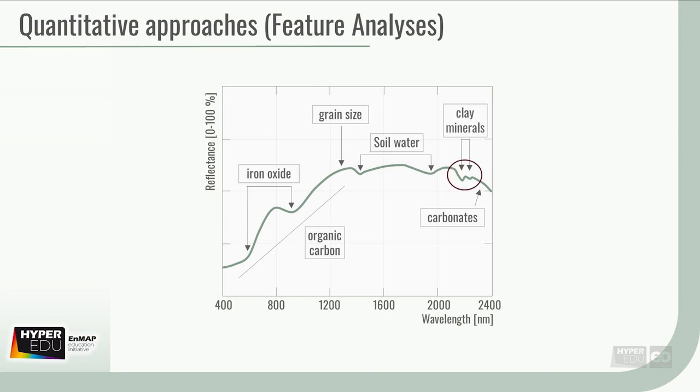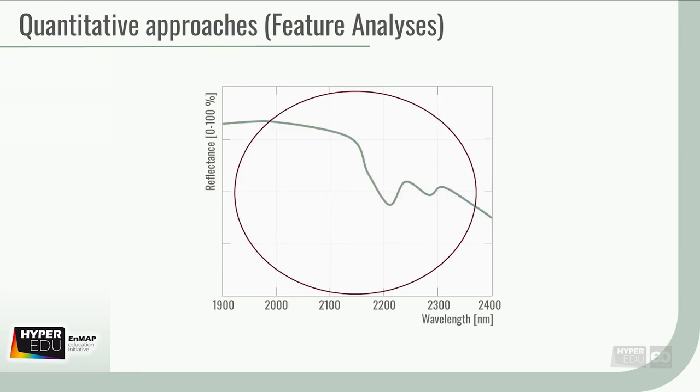Thus, they are called spectral absorption features, or simply, features. The shape and the position of such a feature allows for the identification of the soil property they're causing, without the need for reference data.